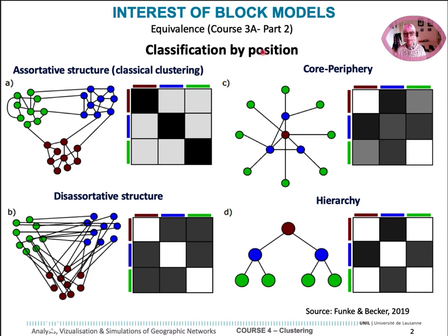The block models are based on equivalence concepts introduced in course 3a part 2. The classical clustering concept, named here as sortative structure, maximizes connection inside the groups. In the representation of connections between the groups — what we call the image matrix — the diagonal is maximized inside each group.